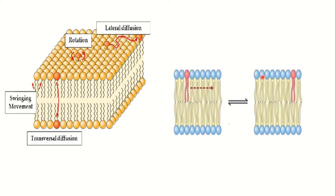So lipids show 4 types of movement but proteins show only 2 types of movement — lateral movement and rotational movement. Now that we understand lateral diffusion, we can understand how the FRAP technique is used to determine the rate of lateral diffusion for any particular protein or lipid. Let's see how the experiment is designed.